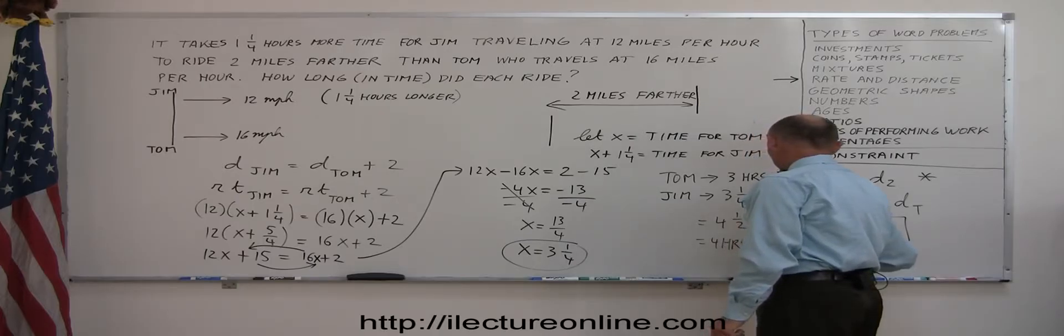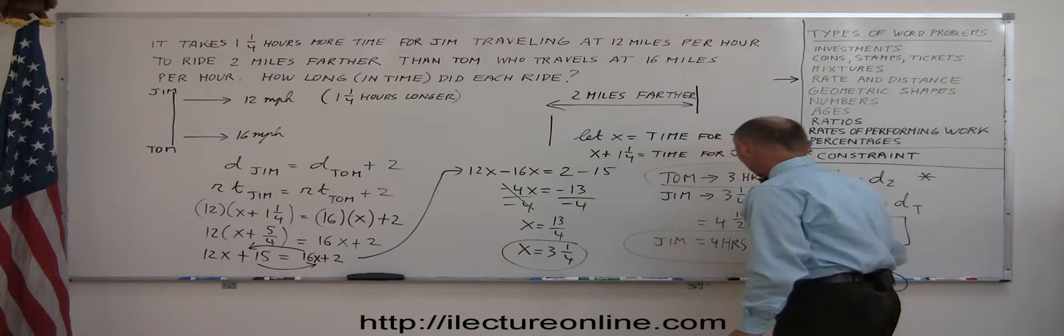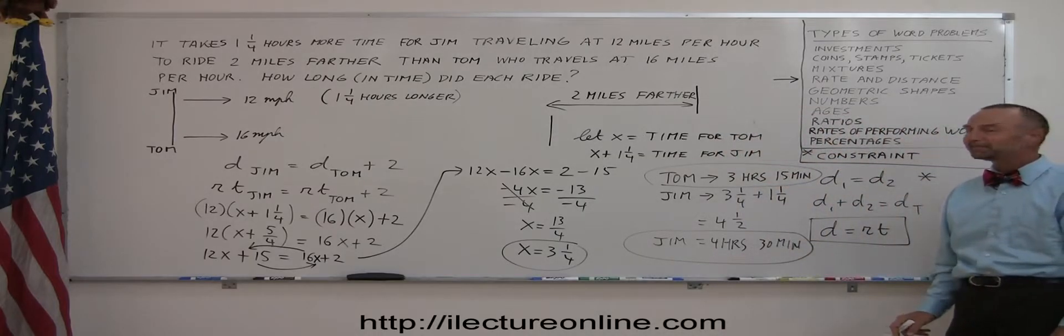Of course, 4 goes into 13 three times with a remainder of 1. So we could write x is equal to 3 and a quarter. And since x represented the time for Tom, so Tom travels for a time of 3 hours and a quarter. That's the same as 15 minutes. And then since Jim travels 1 and a quarter hours longer, we have 3 and a quarter plus 1 and a quarter. So that's equal to 3 and 1 is 4. A quarter and a quarter is a half. So that's equal to 4 hours and 30 minutes because a half hour is 30 minutes. So Tom travels this long and Jim travels this long.